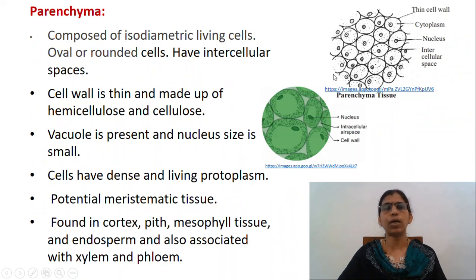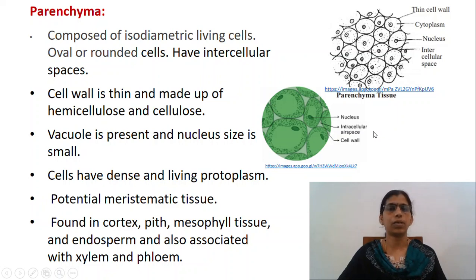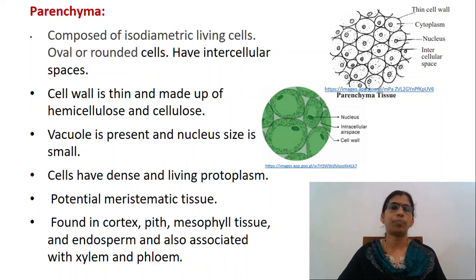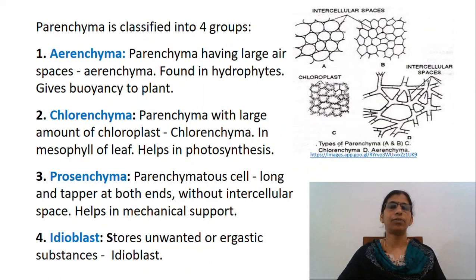Parenchyma is composed of isodiametric living cells which may be oval or rounded. Cells have intercellular spaces. Cell wall is thin and made up of hemicellulose and cellulose. A vacuole is present and nucleus size is small. Cells have dense and living protoplasm. Cells may show meristematic activity, so these are also called potential meristematic tissue. It is found in cortex, pith, mesophyll tissue and endosphere, and is also associated with xylem and phloem. According to specific function, parenchyma may be classified into different types.